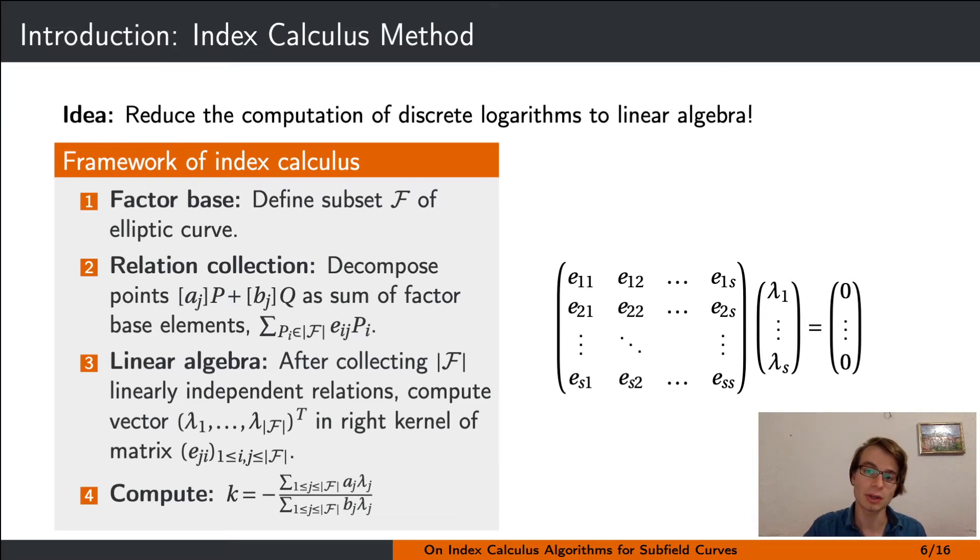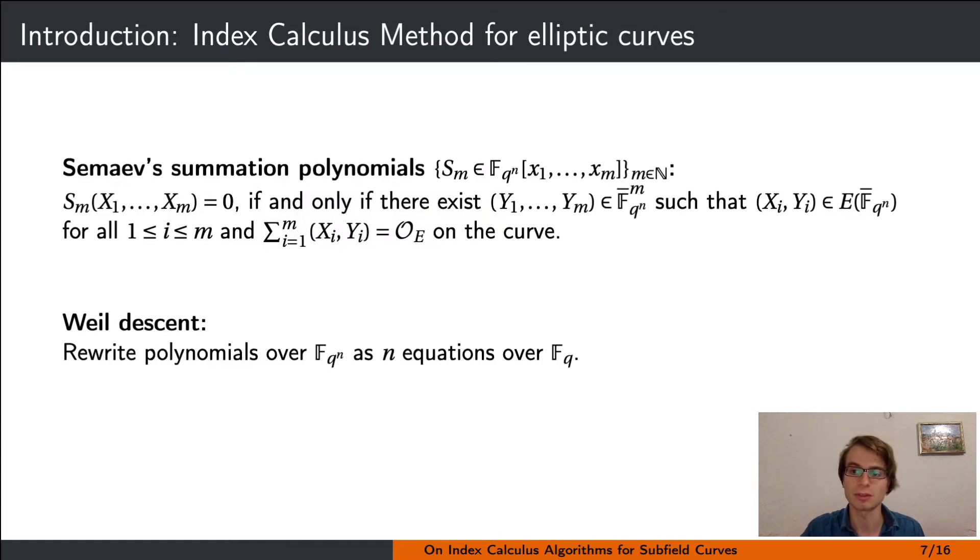For elliptic curves this problem is solved with two crucial ingredients. One is Semaev's summation polynomial associated to an elliptic curve. They have the defining property that they have a root at x1 to xm precisely if there exist values y1 to ym such that the pairs (xi, yi) define a point on the elliptic curve and they sum up to the neutral element.